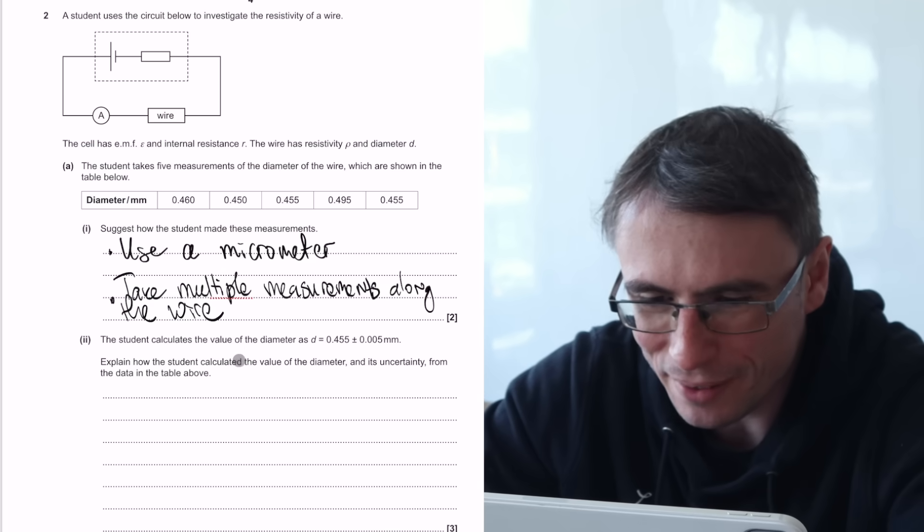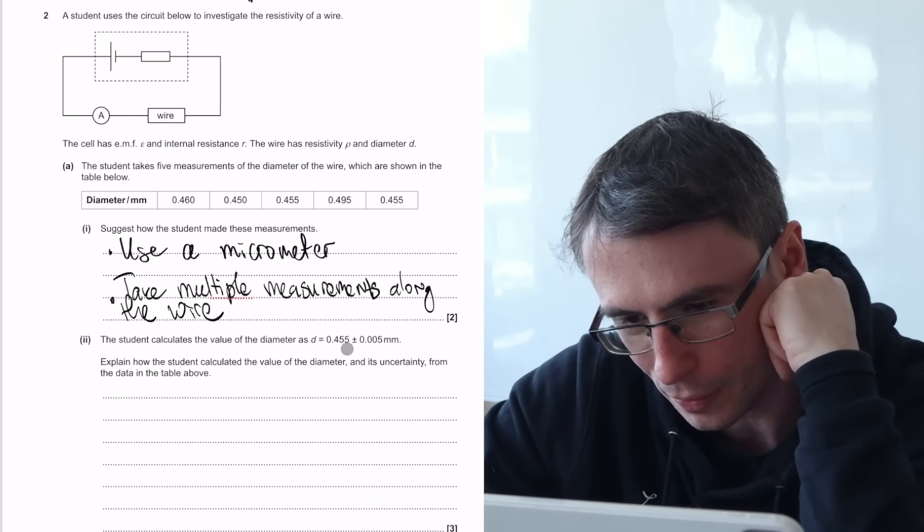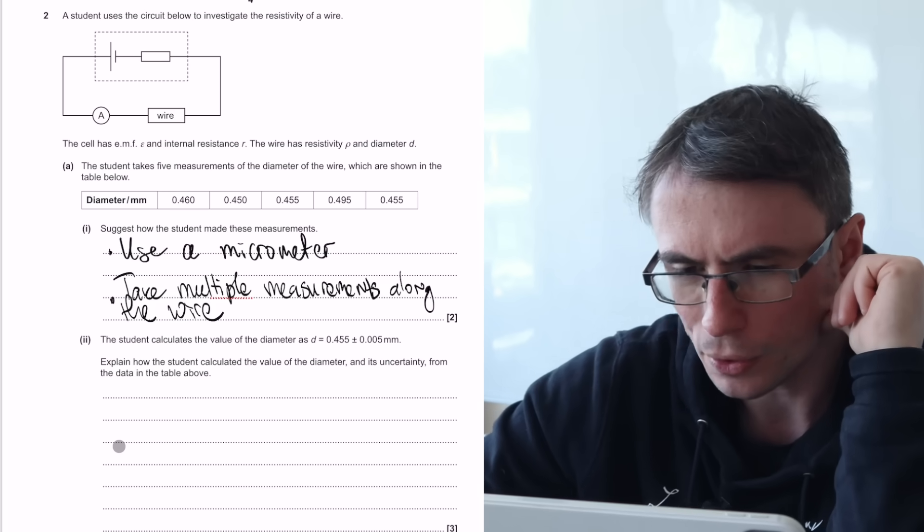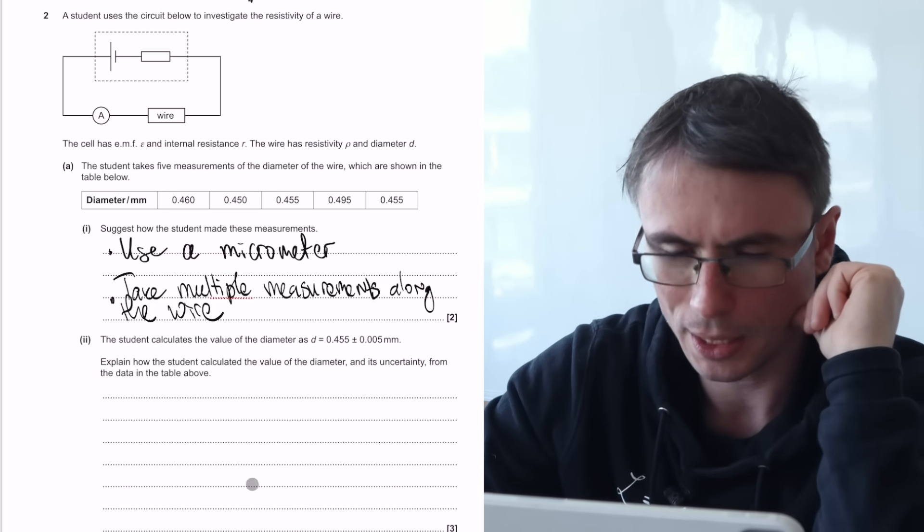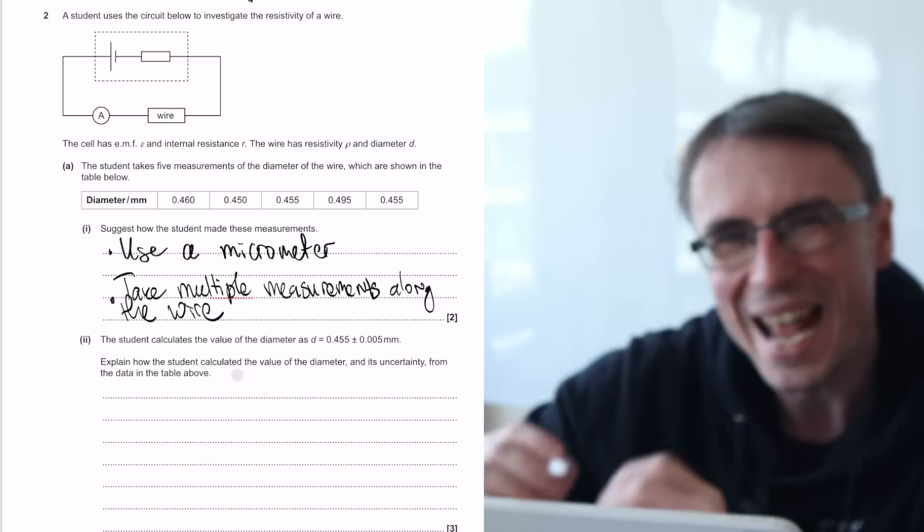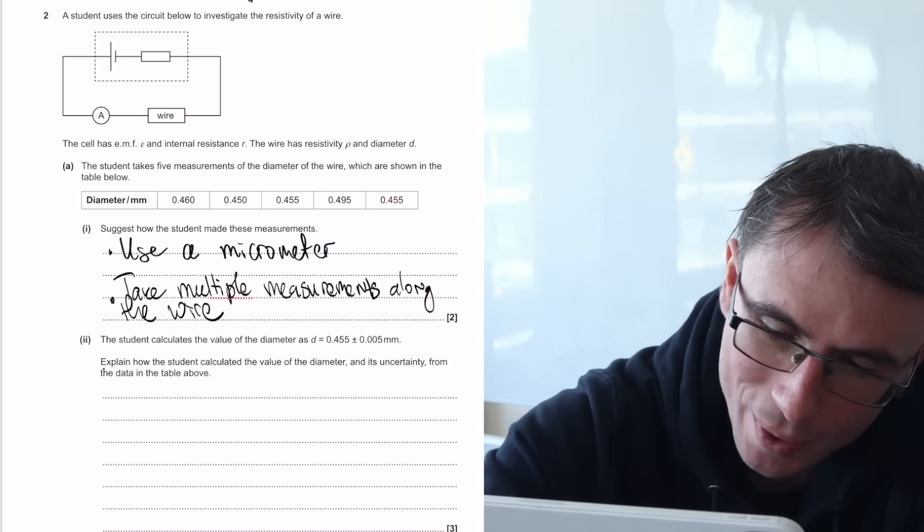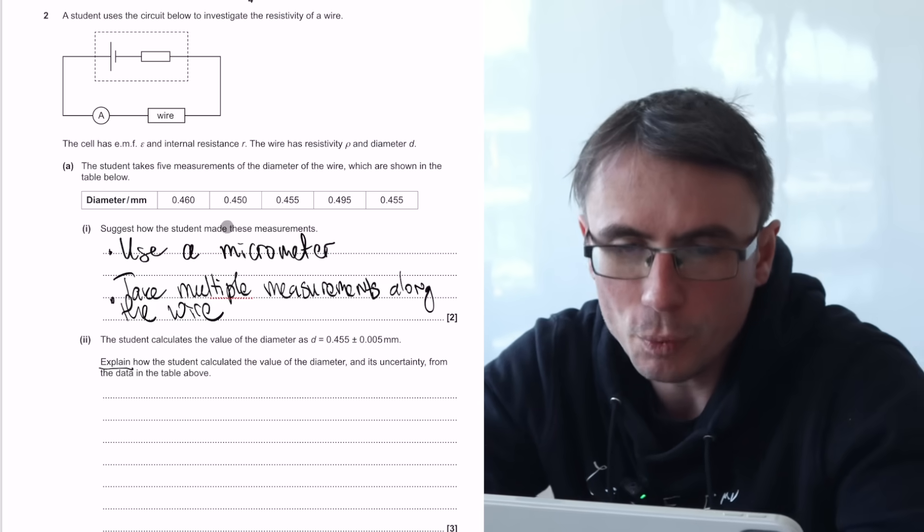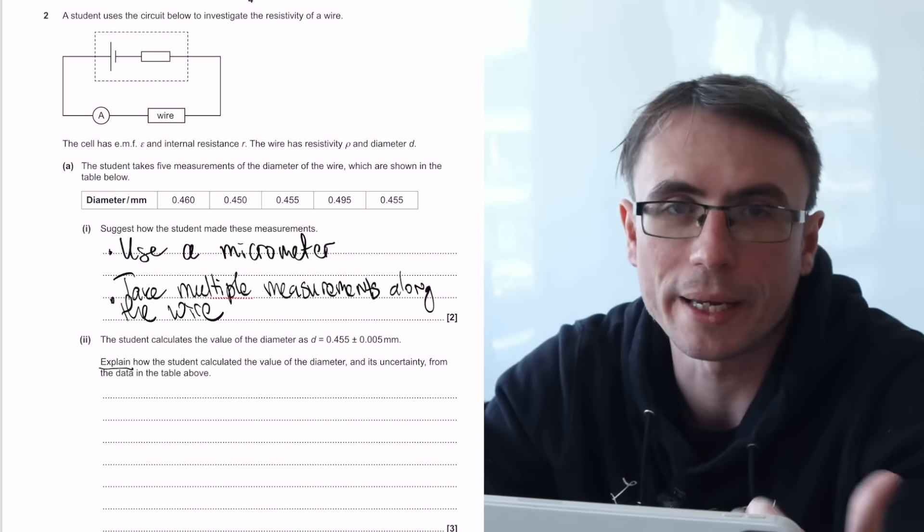Part two, the student calculates the value of the diameter as d is equal to 0.455 plus or minus 0.005 millimeters. Explain how the student calculated the value of the diameter and its uncertainty from the data in the table above. My next tip is to pay careful attention to the command word. So in this case, this is explain. Additionally, whenever we're presented with a table, we should always be looking for an anomaly.